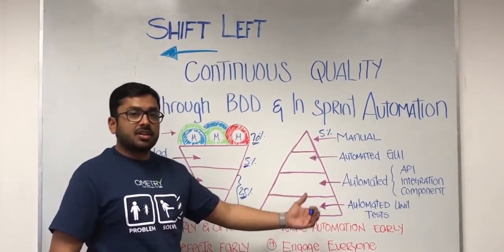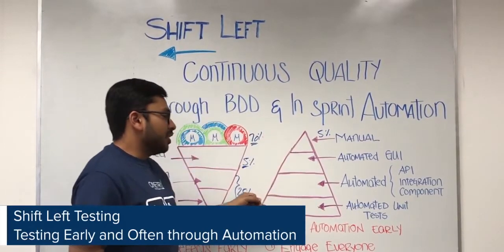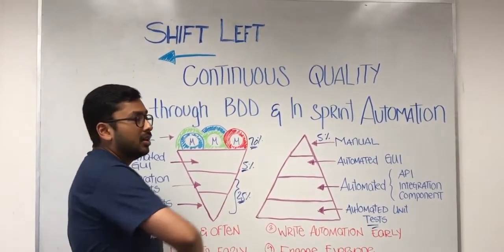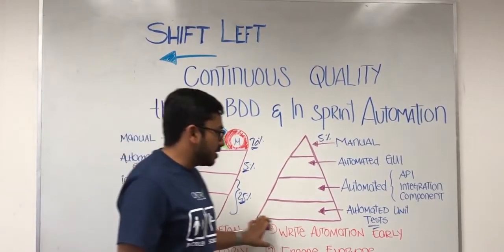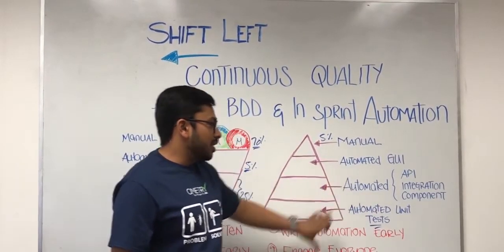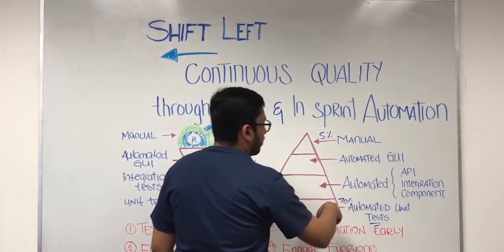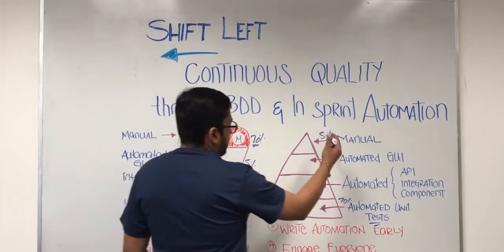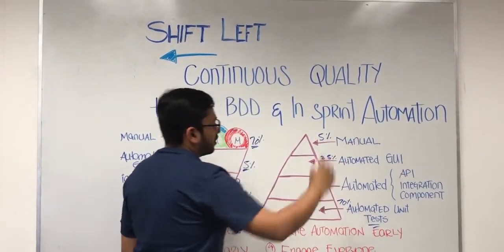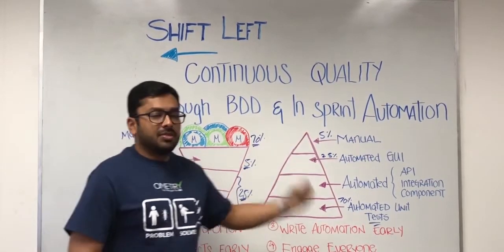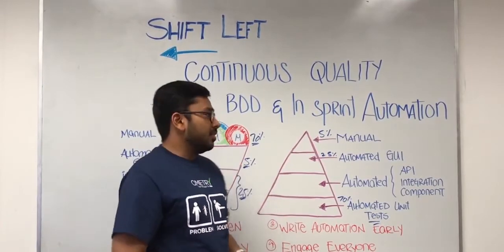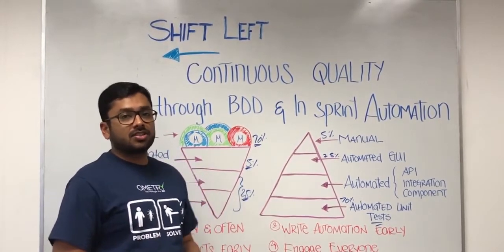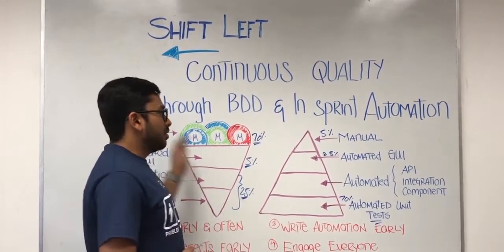In shift left, we want to test early in the life cycle through automation. This is represented by the inverted pyramid, where bulk of your testing is done through automation — about 70% covered through unit test automation and API integration automation. Approximately 25% is covered through automated GUI testing, and very minimal manual testing, around 5%, is done at the UAT layer before pushing code to production.